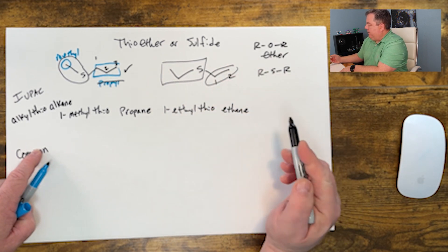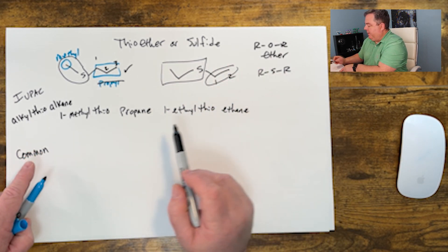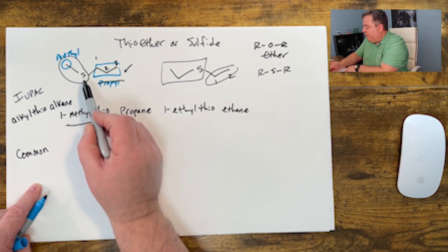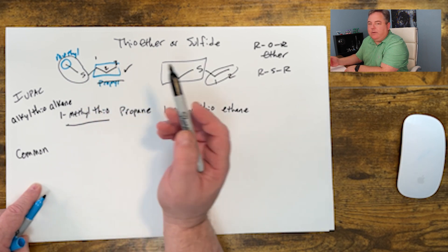So find the alkyl group, put the thio prefix which means the sulfur part, on the longest base chain.